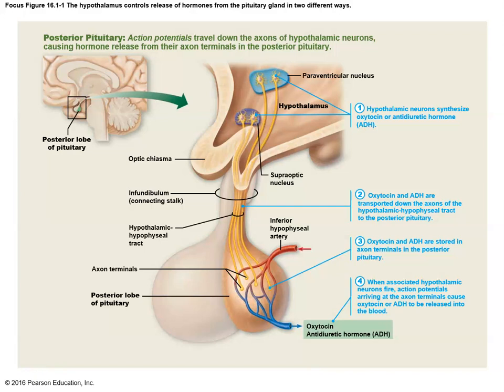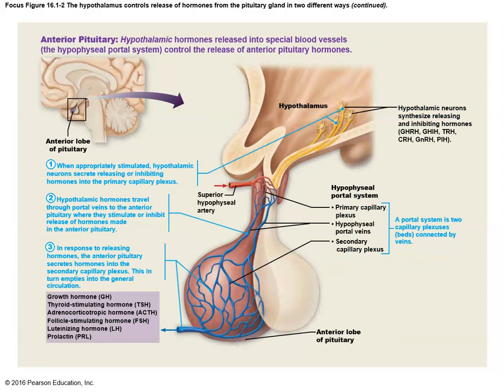The hypothalamus makes oxytocin and antidiuretic hormone. Oxytocin stimulates uterine contractions for childbirth and is involved in breast milk production and letdown — reproductive functions. Antidiuretic hormone regulates kidney urine production. Neither of those functions happens anywhere near the brain, but that's where the hormone production started. The hypothalamus then sends those two hormones to the posterior pituitary, where they are stored and later released into the blood when needed.